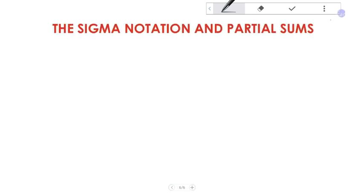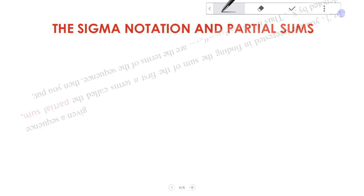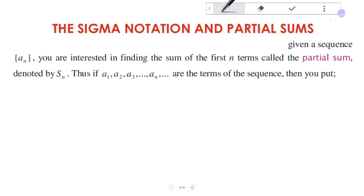This is the sigma notation and partial sum. Given a sequence a_n, you are interested in finding the sum of the first n terms, called the partial sum, denoted by S_n.